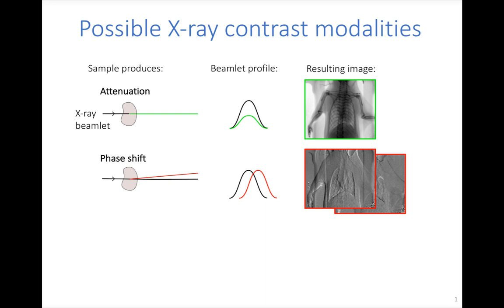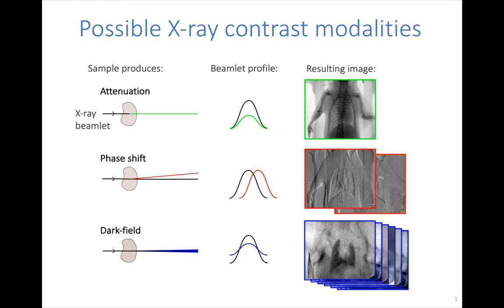A third modality is the dark field, where we look at how the beamlet is blurred out. This signal is most prominent when sub-pixel structures within the sample are incoherently scattering the light. In the example image, we see strong dark field signal from the lungs, from the fur of the mouse being imaged, and from the fibrous tape holding its arm in place.